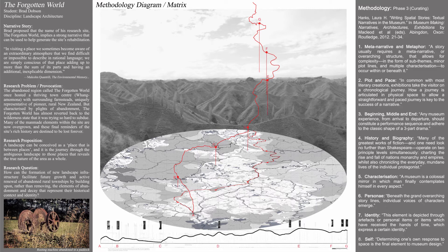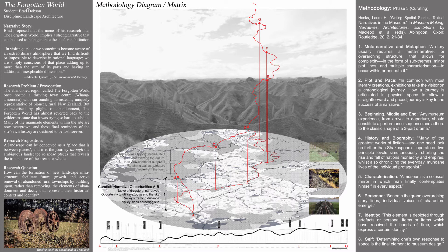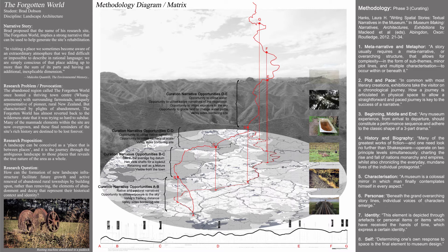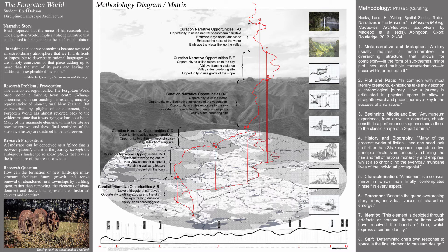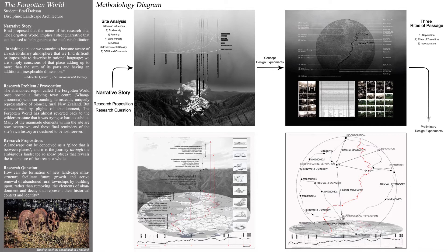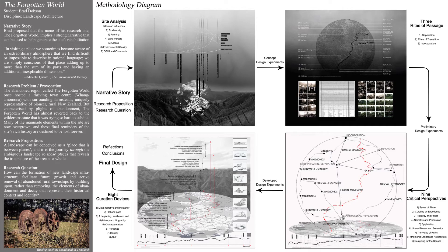For this phase, Brad interrogated Laura Hanks' eight principal devices for museum curation: meta-narrative and metaphor, plot and pace, a beginning, middle, and end, history and biography, characterization, persona, identity, and self. Brad integrated these eight theoretical devices into design experiments that sought to curate existing features of the landscape with new landscape interventions to help them attain recognition as curated elements. Brad's interrelated methodology diagrams together provided a clear sequential methodology pathway for a multi-layered narrative research investigation.